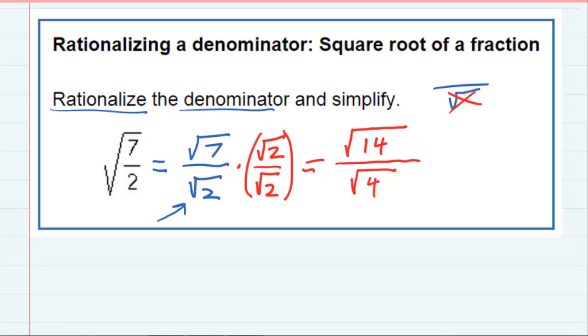You may recall we're trying to get rid of that square root in the bottom, and we now have the square root of 4, which can be evaluated. The square root of 4 is just 2, without the radical, because we've taken the square root of 4, which is 2.